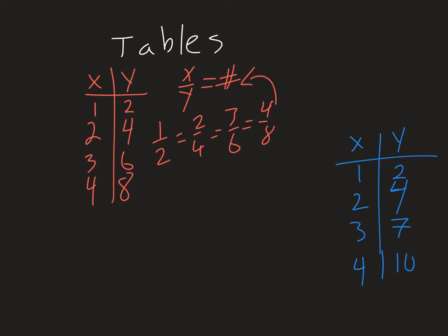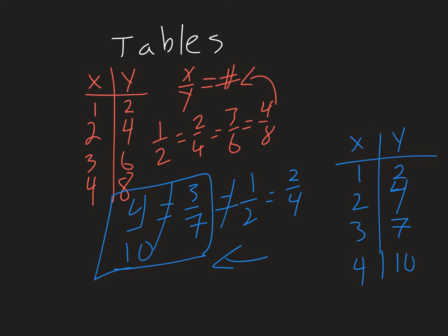Well sure, these two, 1 half does equal 2 fourths. However, these are not equal to 3 sevenths, and it's not equal to 4 tenths. It's not maintained all the way throughout, this creates a problem. So this means this would be non-proportional.